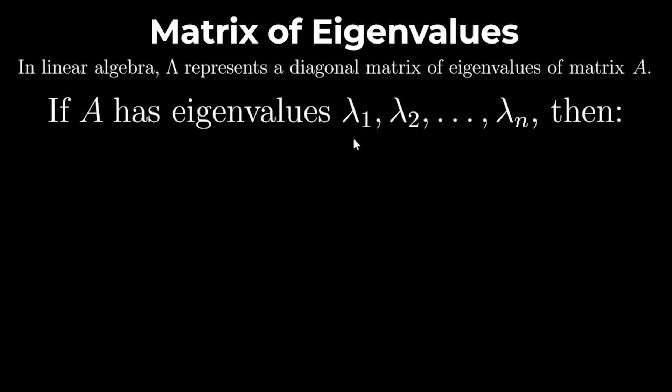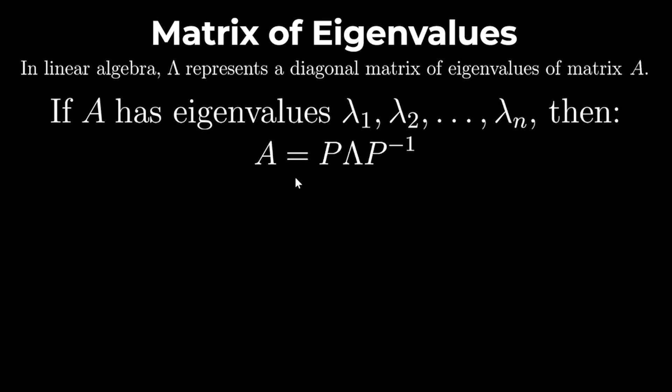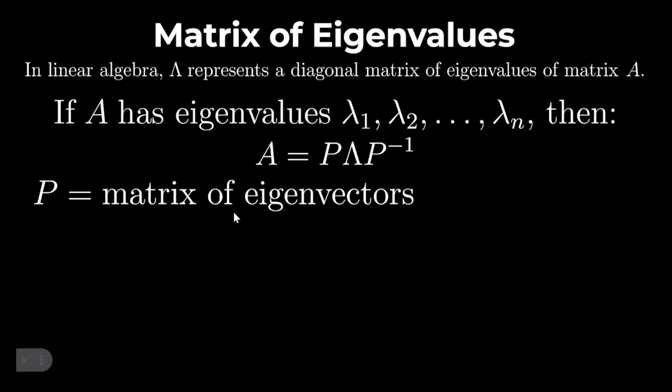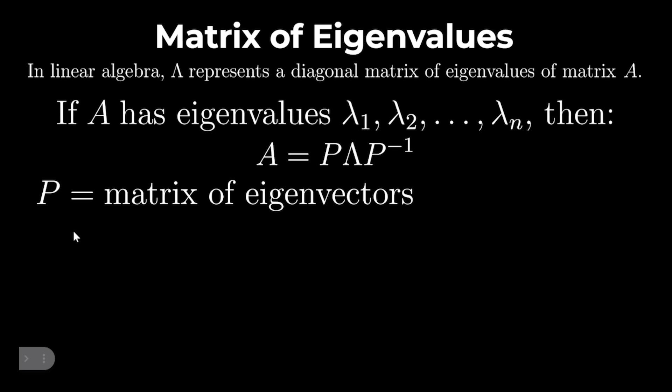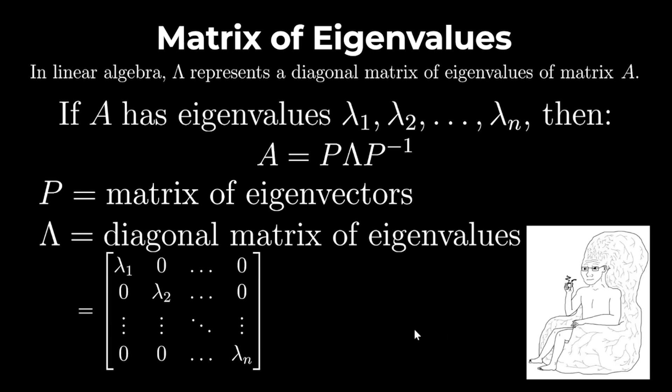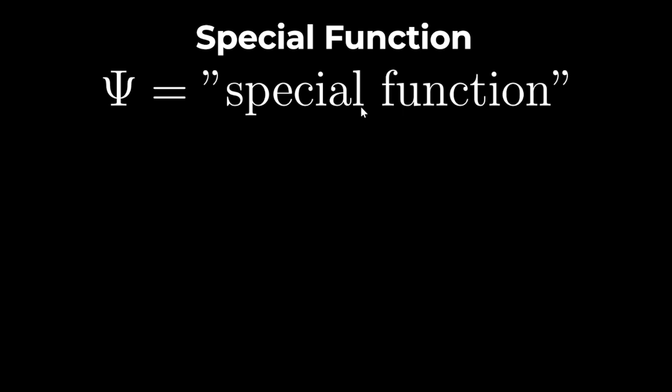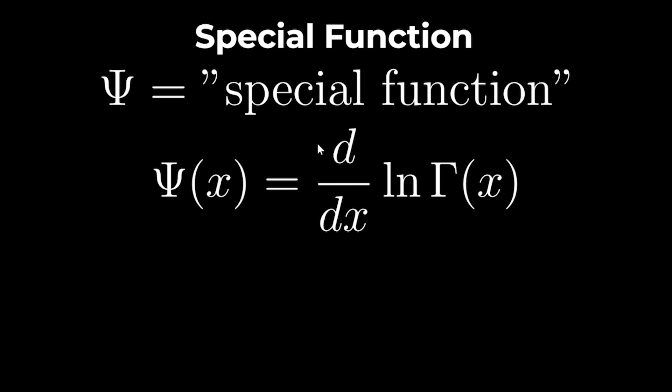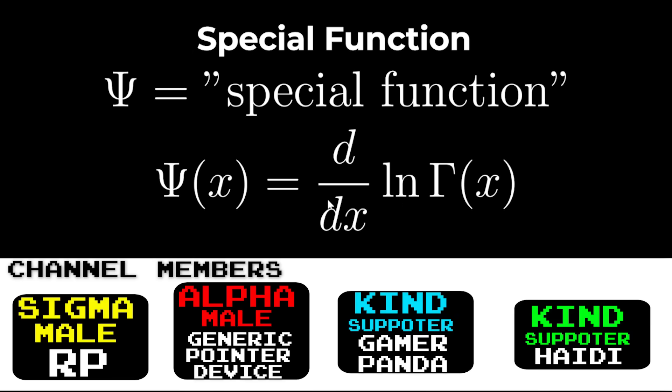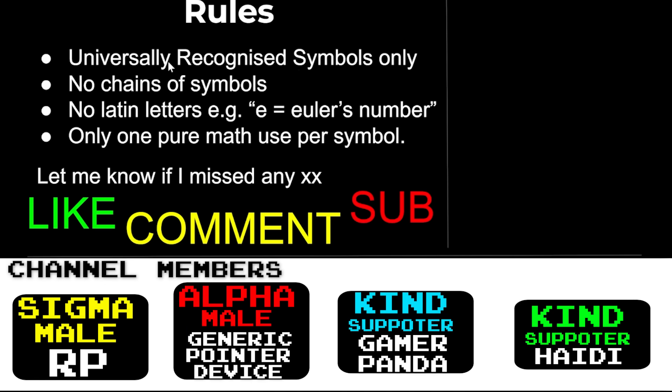If A has eigenvalues lambda 1, lambda 2, lambda 3, and so on, then A equals P lambda inverse P where P is the matrix of eigenvectors and lambda is the diagonal matrix of eigenvalues. In complex analysis, Poseidon notes the complex potential or special function, such as the digamma function, which is defined as the derivative of the log of the gamma function. Click on this video if you want to see more and piss off.